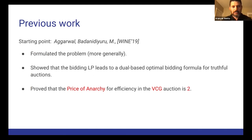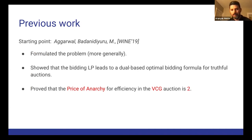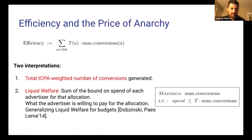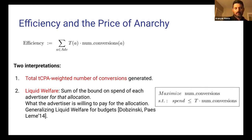There is previous work along this line. The starting point is the paper with Agarwal and Badhanadu from 2019, where we formulated the problem more generally and showed that for auto-bidding, the bidding LP leads to a dual-based optimal bidding formula for truthful auctions. We proved that the price of anarchy for efficiency in the VCG auction is two. In the TCPA setting, the efficiency metric is the sum over advertisers of the target CPA of the advertiser multiplied by the number of conversions.